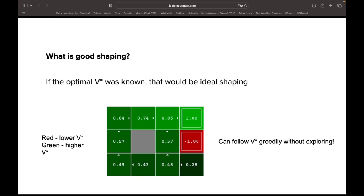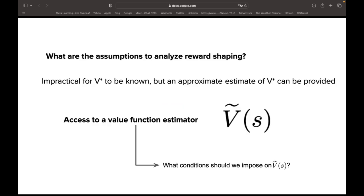To answer this question, let us think about what we would consider to be a good reward shaping. If, for instance, we were given access to the optimal value function V star, that would serve as a good source of reward shaping, since an agent could follow V star greedily without excessively exploring or going down unnecessary suboptimal paths. However, if we know V star, the problem would already be solved. Although it is impractical to assume that V star is known, an approximate version of it may actually be available. So what remains to introduce is a reasonable set of assumptions for this value function estimator.